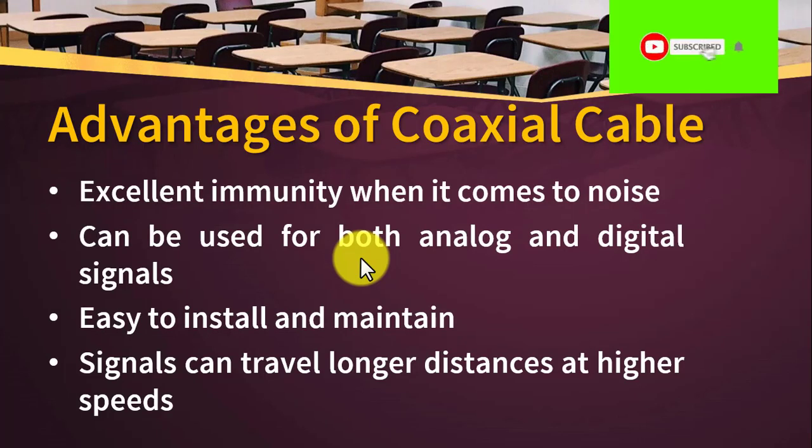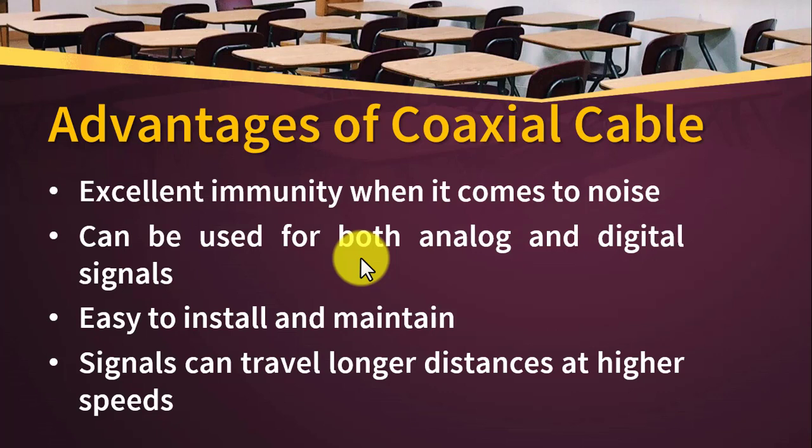The advantages of coaxial cable: it has excellent immunity to noise — great immunity to protect data from external noise. It can be used for both analog and digital signals, which is one of its most important advantages. It is very easy to install and its maintenance is quite easy. Similarly, signals can travel longer distances at a higher speed, which is why coaxial cable is preferred over twisted pair cable.